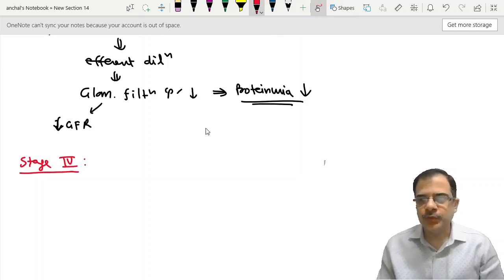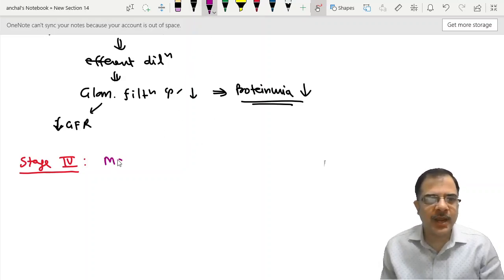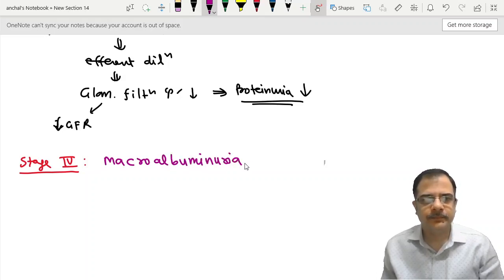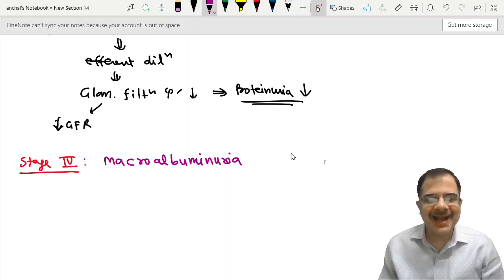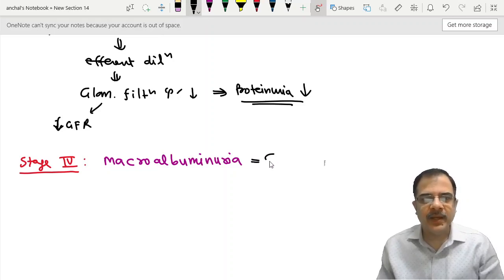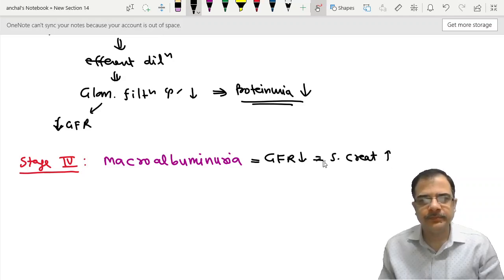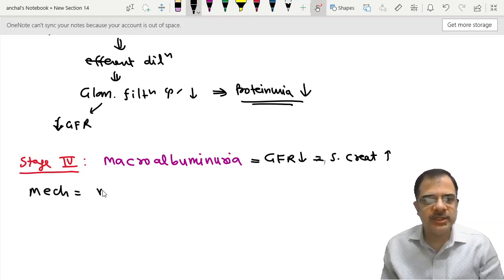Stage 4 is the stage of macroalbuminuria. Macroalbuminuria is diagnosed on urine dipstick, but it is irreversible. GFR is reduced here. Serum creatinine is increased here. The mechanism here is more GBM damage.